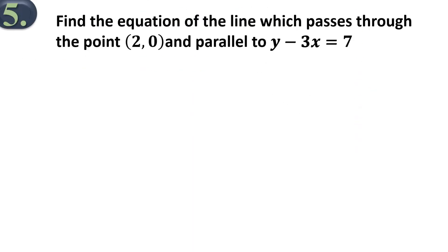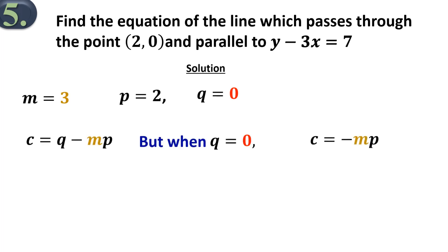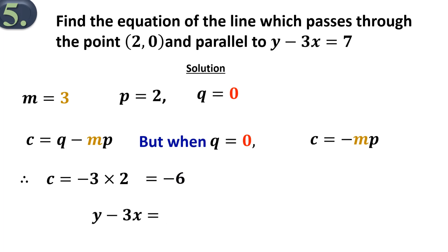Example 5: Find the equation of the line which passes through the point (2, 0) and parallel to y minus 3x equals 7. The solution. From the question, the gradient m equals 3, the x-coordinate p equals 2, and the y-coordinate q equals 0. Using the formula c equals q minus mp, but when q equals 0, c equals negative mp. Therefore c will be equal to negative 3 times 2, which equals negative 6. So our required equation is y minus 3x equals negative 6.